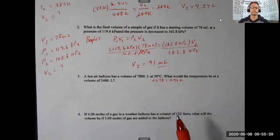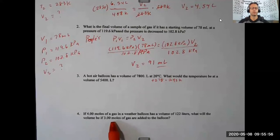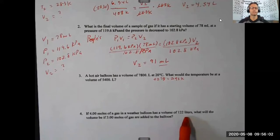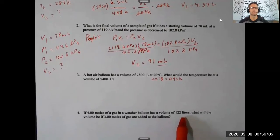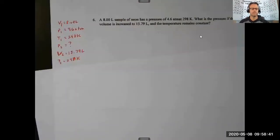Problem four: if 4 moles of gas in a weather balloon has a volume of 122 liters, what will the volume be if 3 moles of gas are added? Here we have number of moles and volume, so this is Avogadro's law — those are directly related. As you increase moles of a gas, volume increases. The formula is N1 over V1 equals N2 over V2.